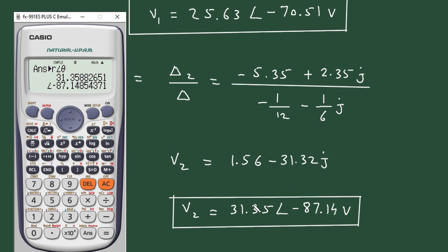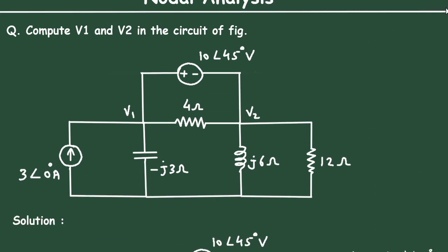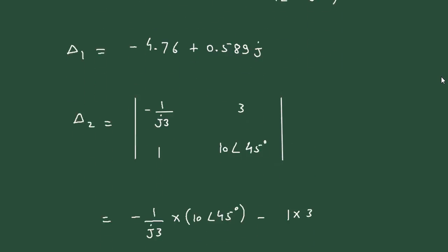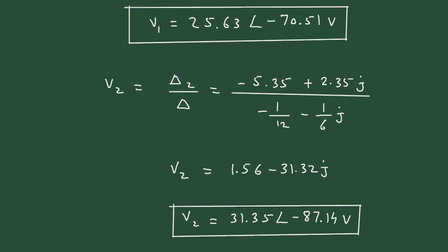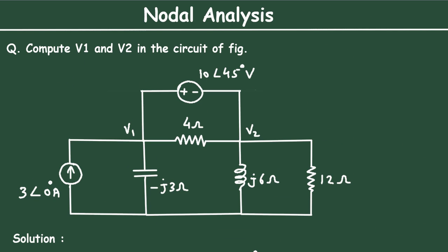To summarize, we had to compute V1 and V2 in the circuit. Therefore, V1 equals 25.63∠-70.51° volts and V2 equals 31.35∠-87.14° volts. Don't forget to check the link in the description below. Thanks for watching.